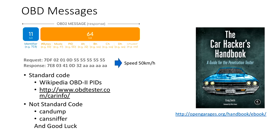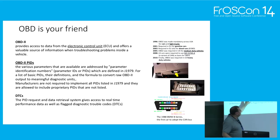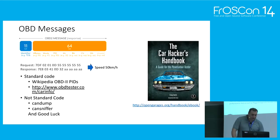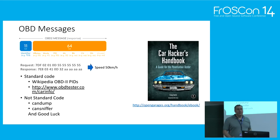The message should be 11 bits for identification and 64 bits for the message. The first byte is the size of the message, the second is the type, and the third one is the PID. What is the PID? Mainly the measurement that you want to read. And after that you have the value. Example: identification request, then identification answer. You have the size, you have the mode, the PID, and then the value. Translated: the car is going at 50 km per hour. Simple.